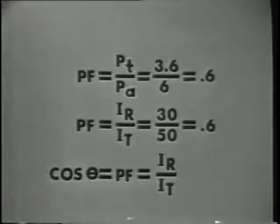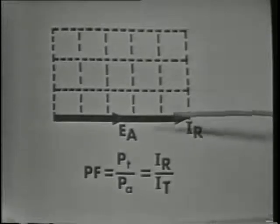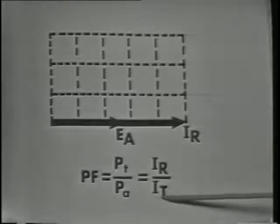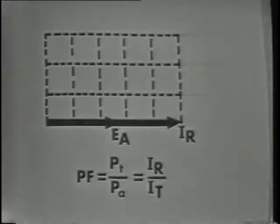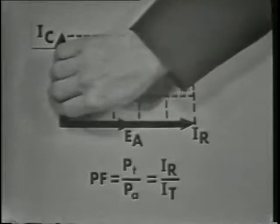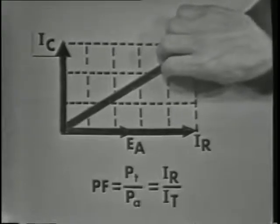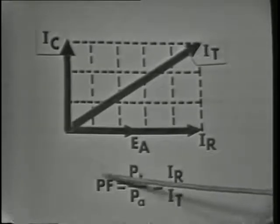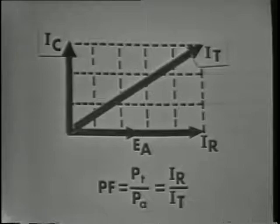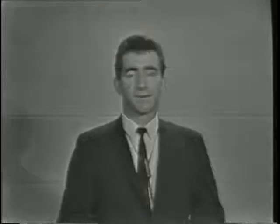Now we can see how the phase angle will influence the power factor, or the efficiency of our circuit. If the circuit were purely resistive, the power factor would equal 1, because IR would equal IT and the true power would equal the apparent power. But if a reactive current were introduced or increased, then total current would increase, angle theta would increase, and the power factor would decrease. As the reactive current increases, we demand more current than we're actually dissipating in the form of heat. This is one of the reasons the power companies watch the power factor very closely.